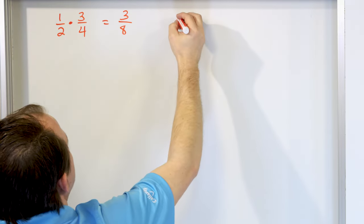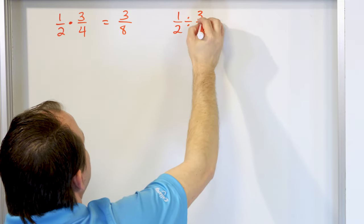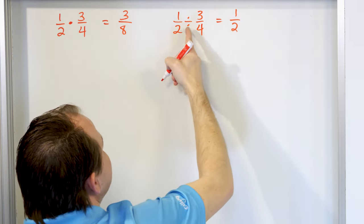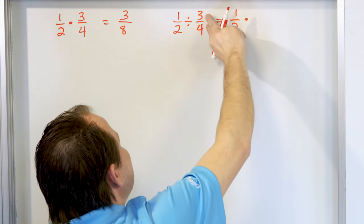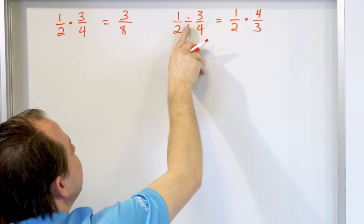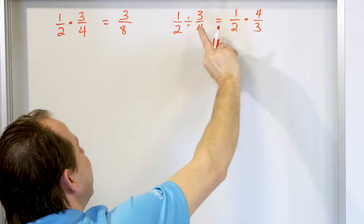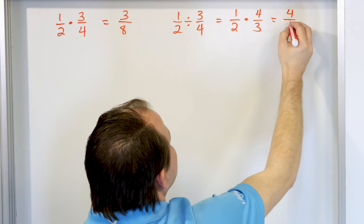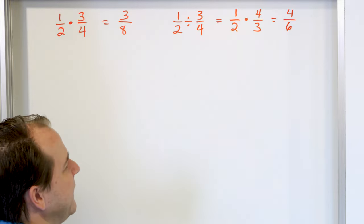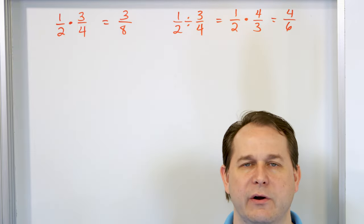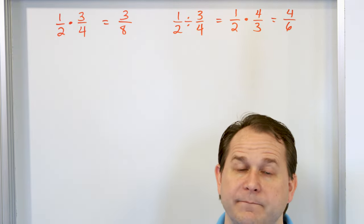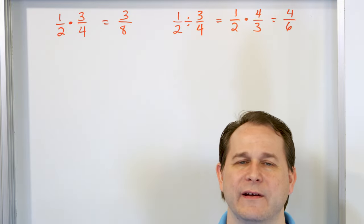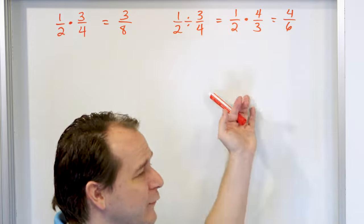How do you divide fractions? If you have 1/2 divided by 3/4, you take the first fraction and leave it alone, but change the division into multiplication. When you do that, you take the second item and flip it upside down — make it the reciprocal: 4/3. So 1 times 4 is 4, and 2 times 3 is 6. You can simplify 4/6 to 2/3. For rational functions, dividing means change to multiplication and flip the second fraction — no difference.